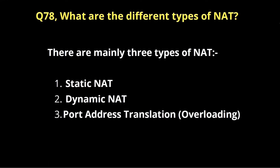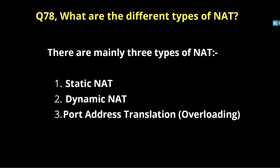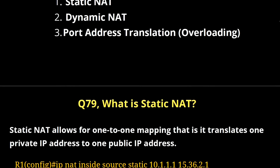The next question is: what are the different types of NAT? There are three types of NAT. First is static NAT, second is dynamic NAT, and third is PAT — Port Address Translation.